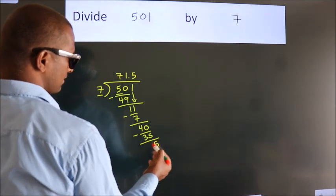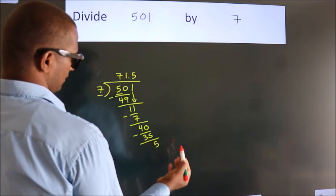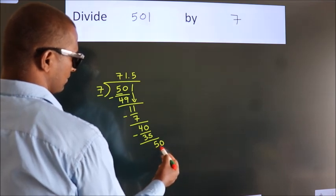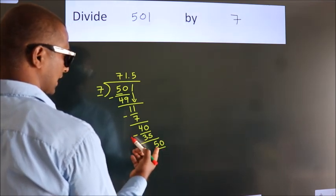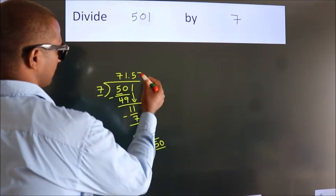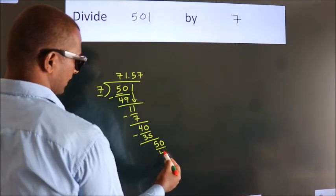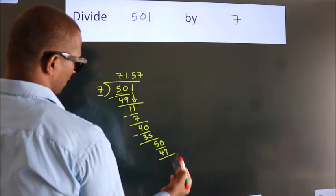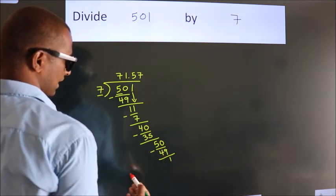After this, we already have the decimal. So directly take 0, giving us 50. A number close to 50 in the 7 table is 7 sevens, 49. Now we subtract. We get 1.